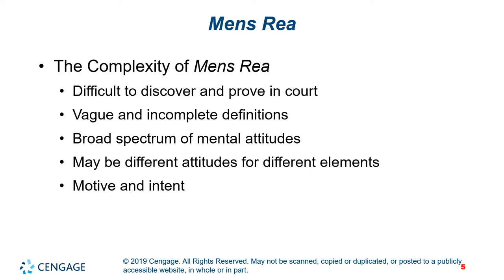Now let's talk about mens rea — the complexity of mens rea. Mens rea is not just ancient, it's also complex. No problem of criminal law has proved more baffling through the centuries than the determination of the precise mental element necessary to convict of any crime. There are several reasons to account for this. First, whatever it means, mens rea is difficult to discover in the proven court. Second, courts and legislatures have used so many vague and incomplete definitions of the mental element.